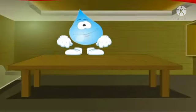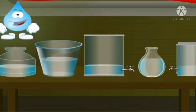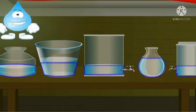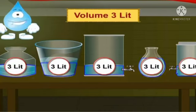Pour 3 litres of water into each of the above containers. The water will take a different shape in each container because each container is of a different shape. But the volume of water in each container is 3 litres.